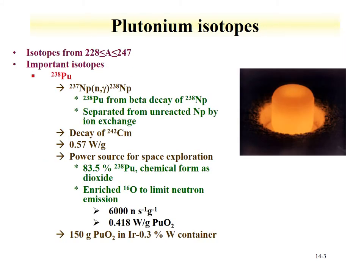There are isotopes of plutonium from as low as 228 to as high as 247. Some of the important isotopes include plutonium-238, which is made from the neutron capture of neptunium-237, producing neptunium-238, which beta decays to produce plutonium-238. This was the route by which plutonium was identified. This relatively short-lived alpha-emitting plutonium-238 has a high specific activity and is relatively easy to observe.